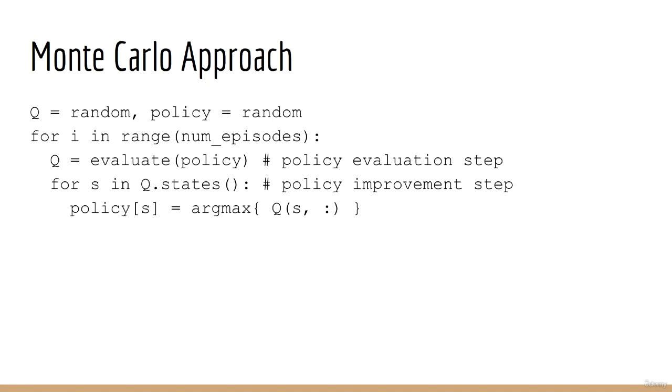So how can we apply this to Monte Carlo? Here's a rough outline. First we start by initializing Q and our policy to both be random. Next we enter a loop that goes for a predetermined number of episodes. Inside the loop, we first evaluate the policy by finding Q for the given policy. We call this the policy evaluation step. Once we've done that, we find a new policy where, for each state, we take the action to be the argmax overall actions for Q with a given state. This is called the policy improvement step. This is pretty simple and not unlike the prediction problem, except for one small difference.